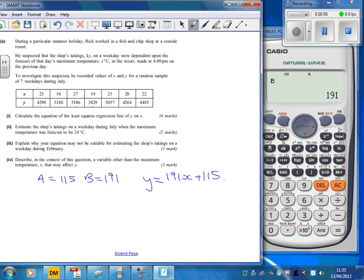Part 2 says it's going to be 24 degrees, so let's put 24 in here. 191 times 24 plus 115 gives us 4699. You could round it to 4700 but certainly no more than that - that's the value we want.